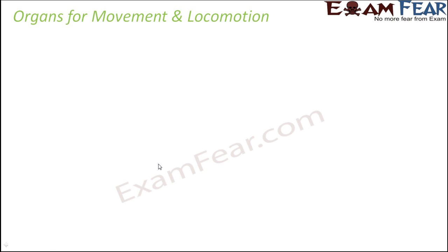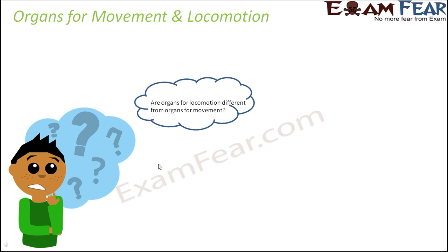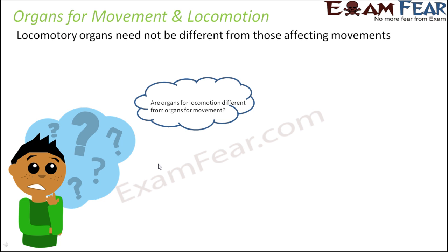The question is: are the organs for locomotion different from the organs of movement? What exactly happens when we try to undergo locomotion? Locomotion is like movement, but the organism changes its position from one place to another. So it is not really necessary that the organs of movement and locomotion be different — they can be the same organs, but sometimes the way they move results in locomotion. Locomotory organs need not be different from those affecting movements.